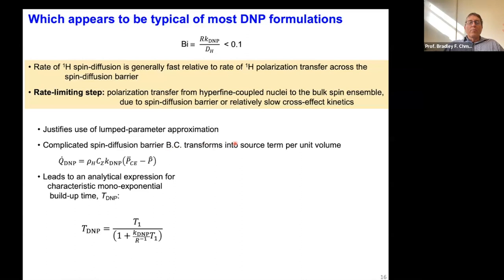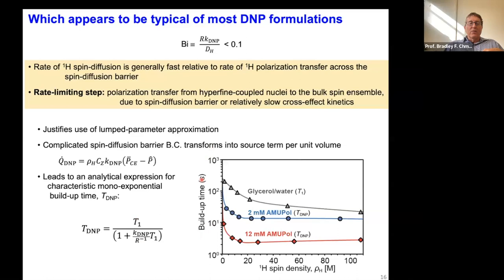The Biot number less than one turns out to be typical of most DNP formulations that are used — that's good because we want to take advantage of all the polarization to get it where we want it to go efficiently. For chemical engineers, this justifies using the lumped parameter approximation, meaning it's very simple — we don't have to consider a gradient in the surrounding frozen matrix. This complicated spin diffusion barrier reduces to just a source term, leading to an analytical expression for the buildup time T_DNP.